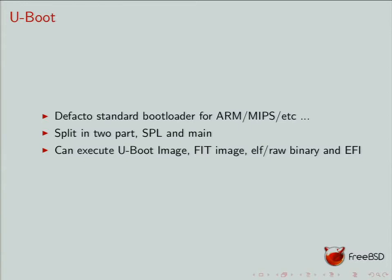U-boot can execute multiple types of executables. The first is the U-boot image, a specially crafted image for U-boot, which we are not using on FreeBSD — I think NetBSD uses the U-boot image to boot their kernel. Recently there was the addition of the FIT image, which stands for Flattened Image Tree. This is an image described using DTS syntax. It supports ELF and raw binary, which we use on FreeBSD to boot our loader, and it also supports EFI.